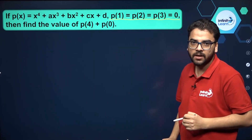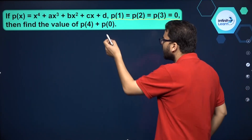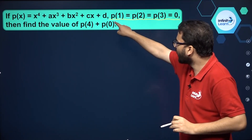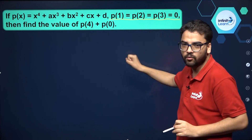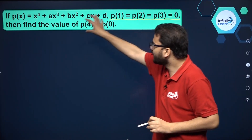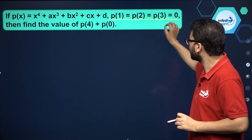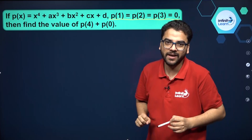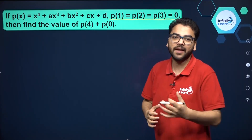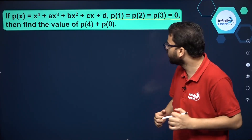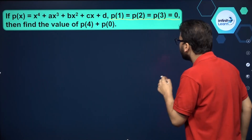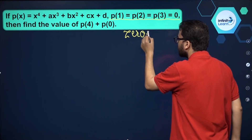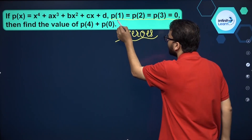You might think that in order to find p of 4 and p of 0, you will first put 1 in the polynomial and set it equal to 0, then put 2, then put 3, but it will waste your time — it will take like 7-8 minutes. But if you use the basic concept of zeros of a polynomial, you can do this question quickly.